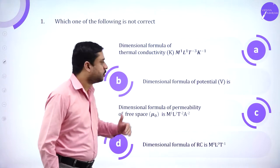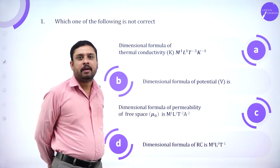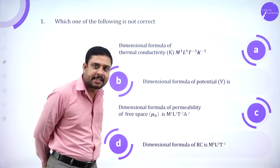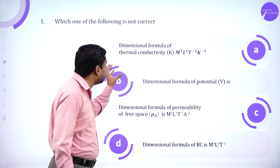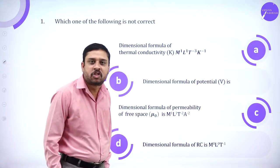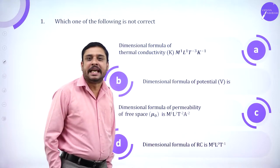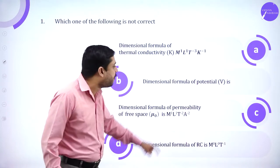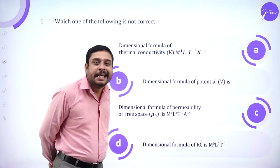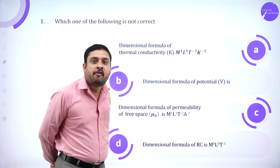The first question gives 4 options for dimensional formulas of certain physical quantities, where one dimension is written wrong. I have to identify that incorrect dimension. Looking at the options, ambiguity and confusion start here, because the dimensional formula for potential is not given directly. So we will work out the dimensional formula for potential.